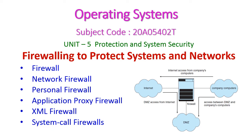In this operating system class we will see firewalling to protect the system and network from the 5th unit. In this class we are going to see what is meant by firewall: network firewall, personal firewall, application proxy firewall, XML firewall, and system call firewalls.